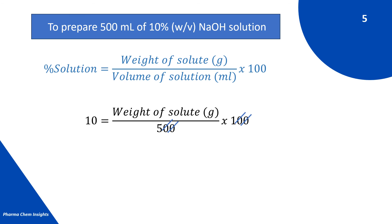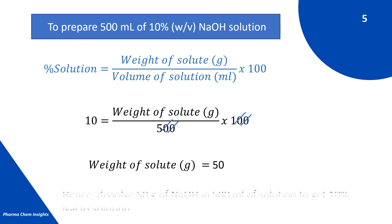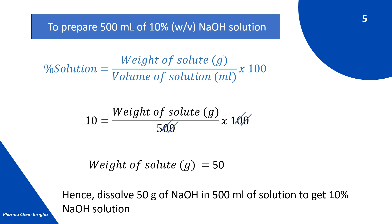By calculating, we get the weight of solute required in grams equals 50. Hence, dissolve 50 grams of NaOH in 500 ml of solution to get 10% NaOH solution. The final volume of solution should be 500 ml.